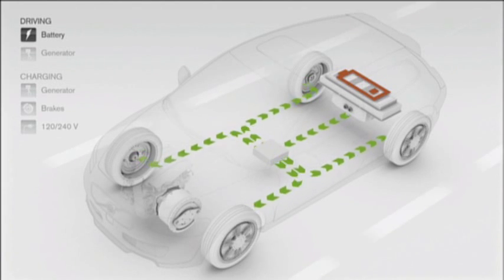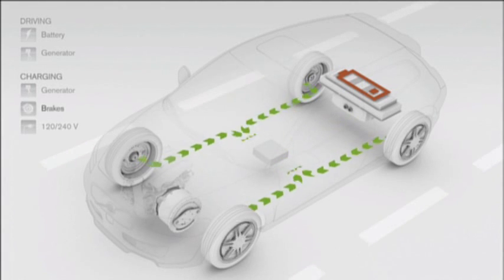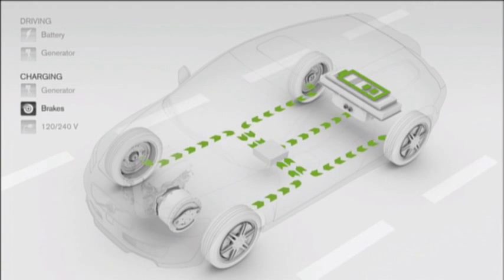During braking, the four electric wheel motors operate as generators, sending power back to the battery.